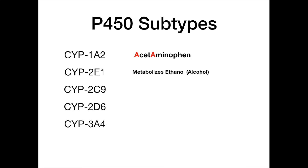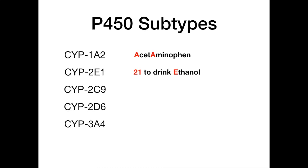CYP2E1 metabolizes ethanol, aka alcohol. This one's super easy — you have to be 21 to drink ethanol. So 2, 1, and the E, just rearranged, gives you 2E1. So CYP2E1 is the subtype that metabolizes alcohol. We're about 60 seconds in and you've already got two free points on test day.